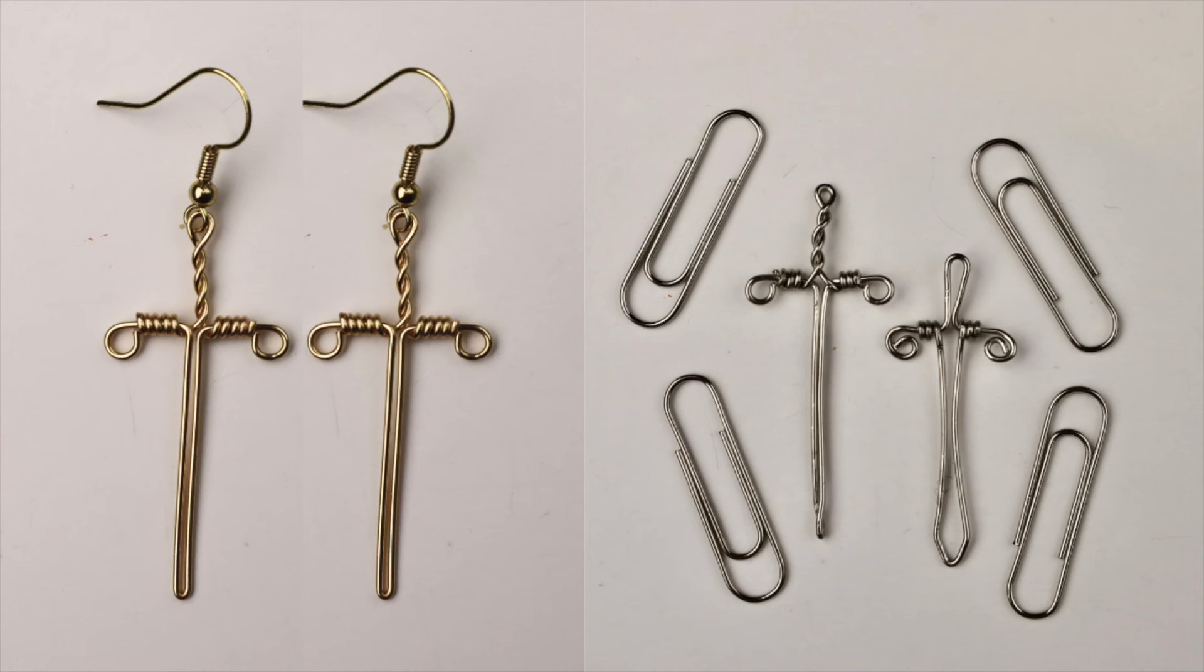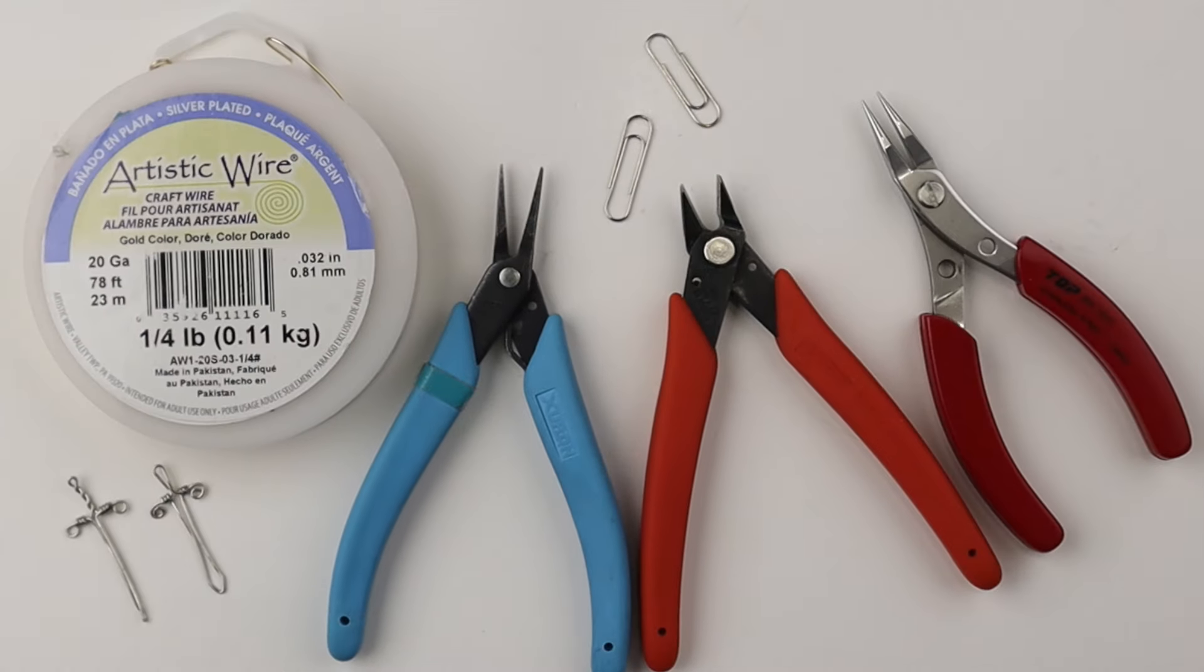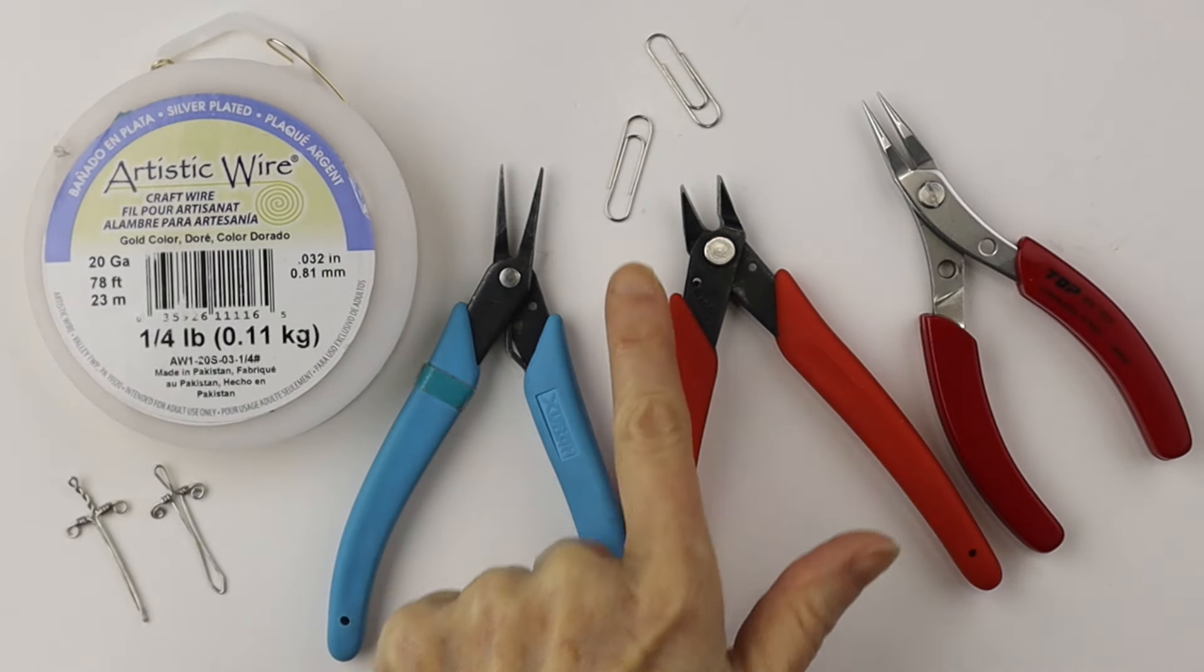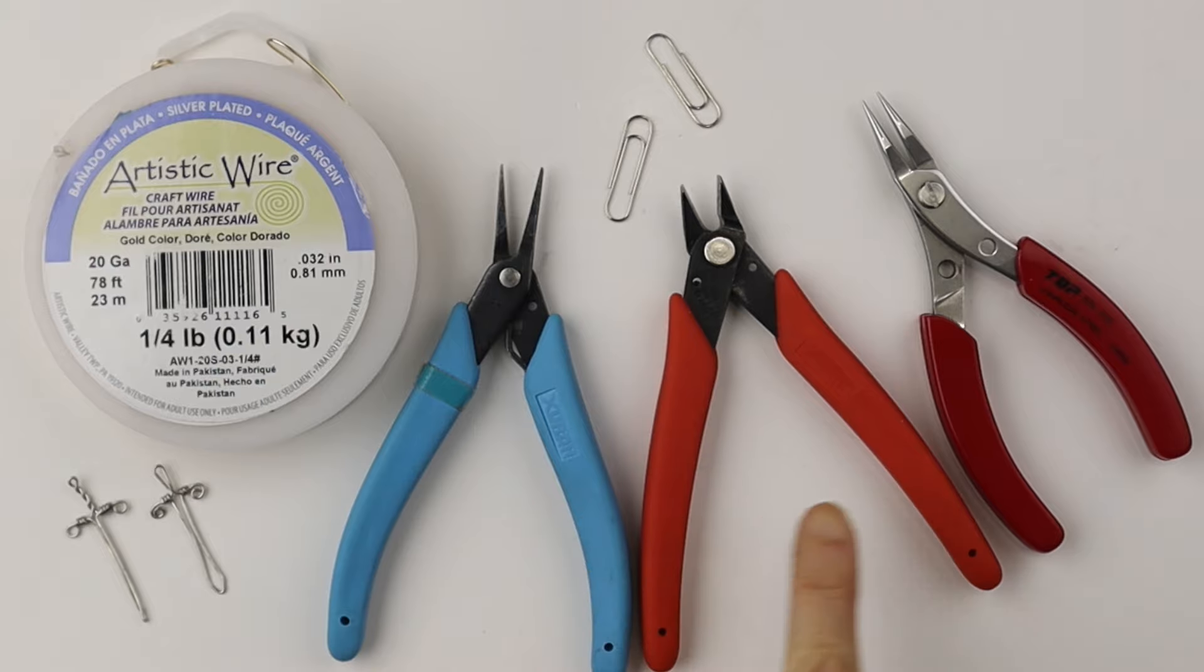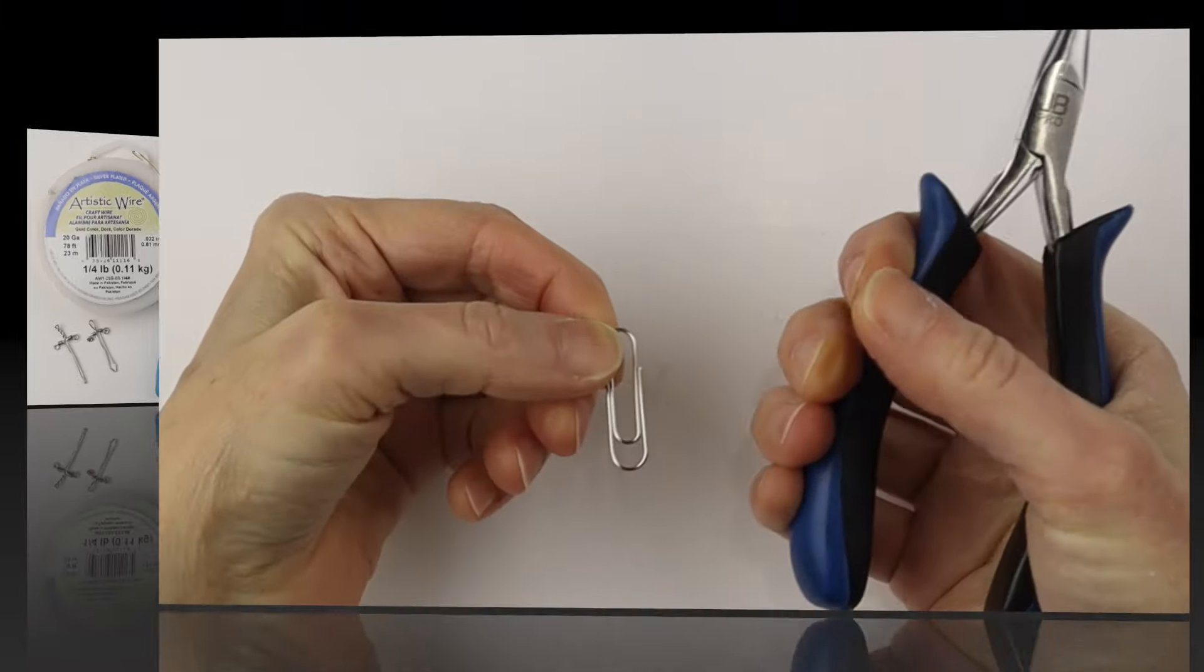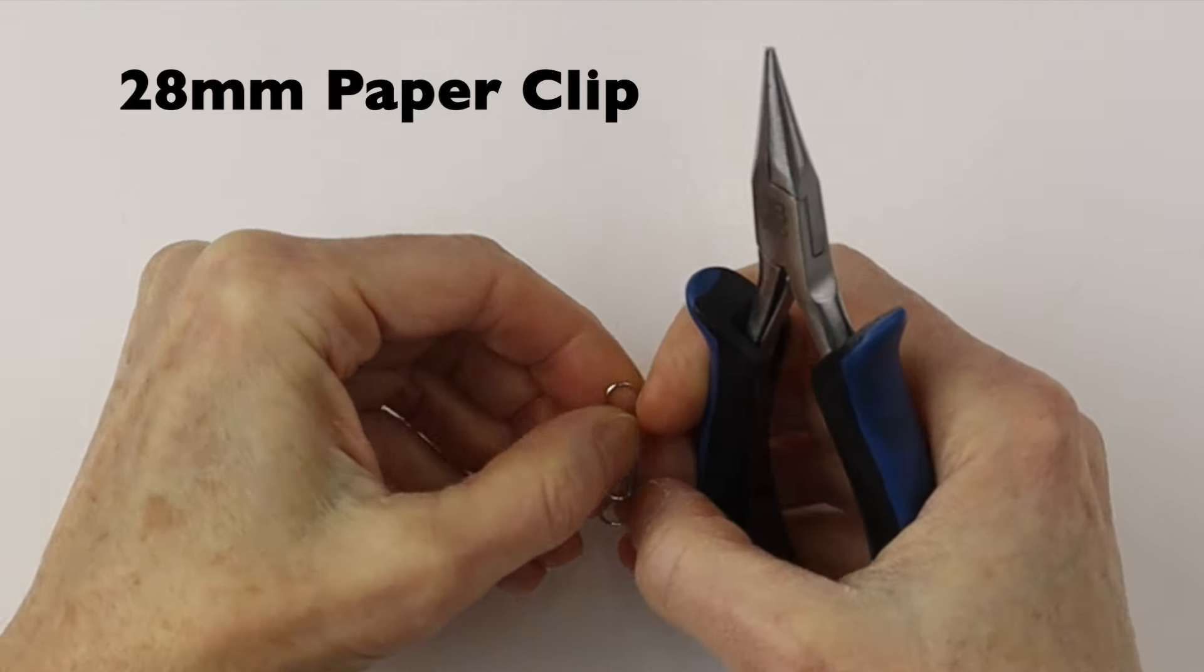Hey there, Heather Boyd Wire here. Today we're making sword pendants and earrings out of wire and paper clips. We are using 20 gauge wire, I have paper clips and my tools.